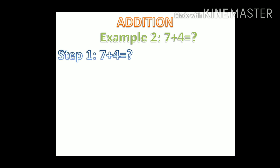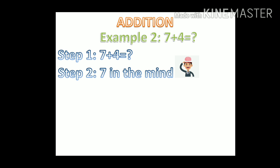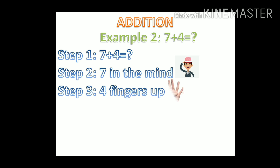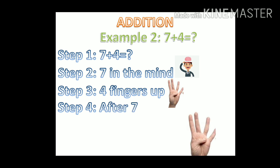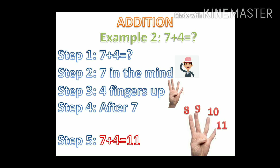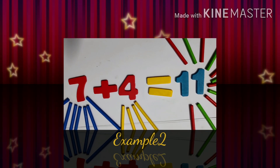7 plus 4 equals? 7 in the mind. 4 fingers up. After 7: 8, 9, 10, 11. The answer is 11. 7 plus 4 equals 11. 4 fingers up.